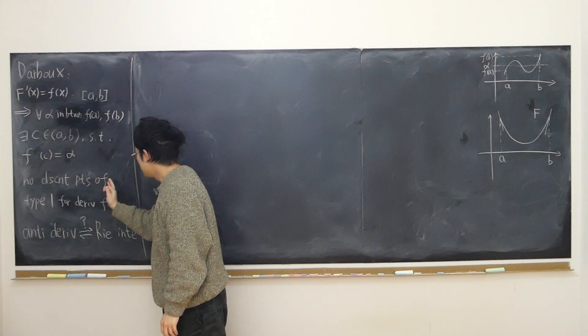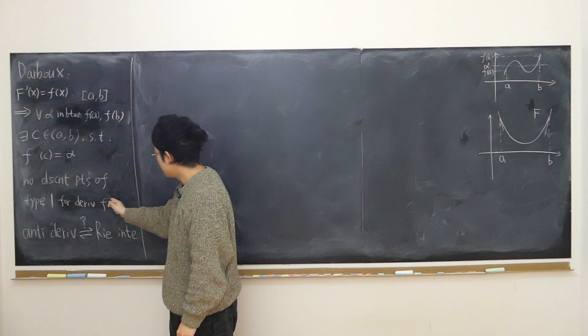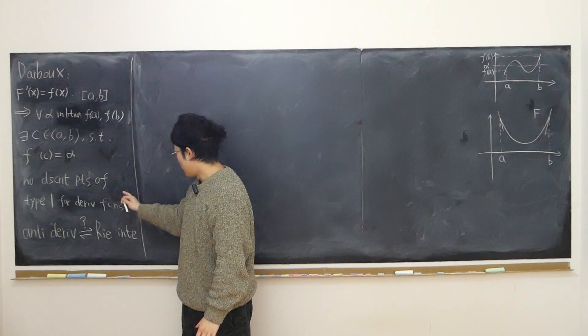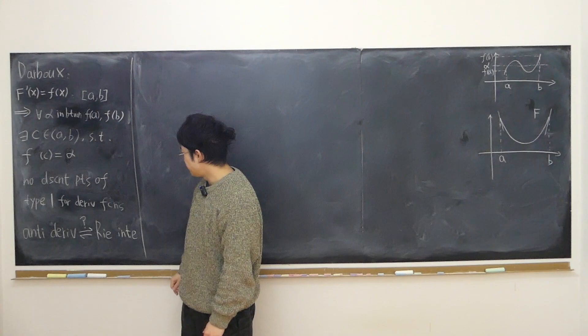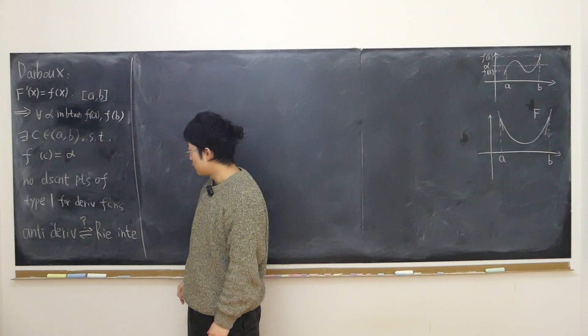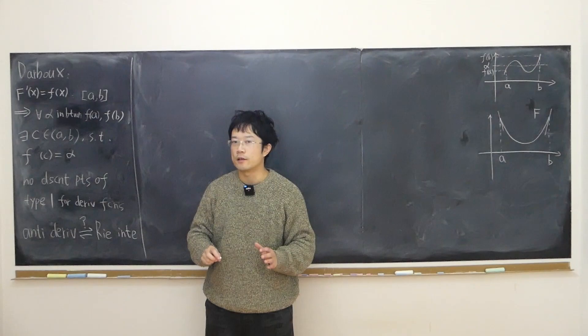I'm going to prove the first part in this video and the second part in a future video. That is, there are no discontinuous points of type one if the function is a derivative function. If it's a derivative function and discontinuous, the only possible discontinuous points are of type two. In a future video, I will also discuss the relation between anti-derivative and Riemann integrability using Darboux's theorem, to show that having an anti-derivative doesn't necessarily mean a function is Riemann integrable, and vice versa.